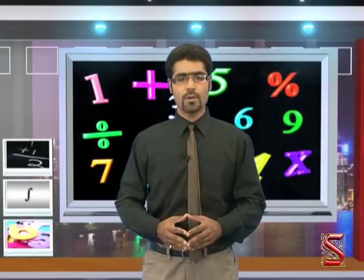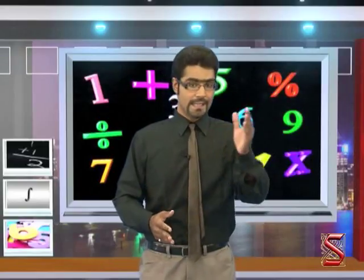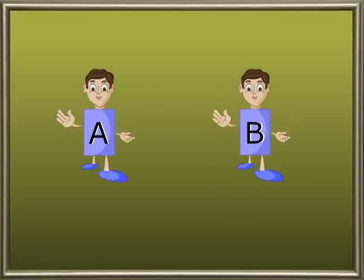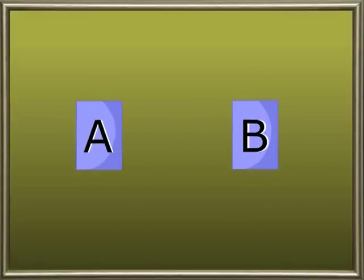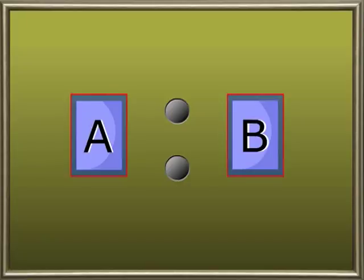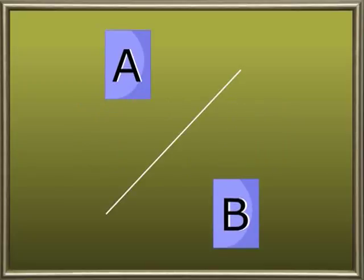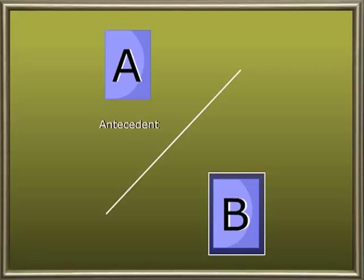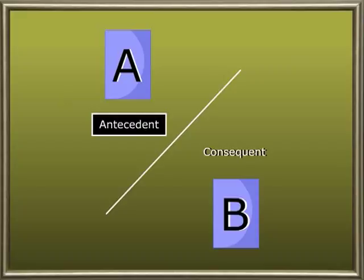Ratio consists of two terms: the antecedent and consequent. If A and B are two numbers, the ratio of A and B is expressed as A is to B and is also written as A by B. A is known as the antecedent and B is known as the consequent. That is, the numerator is called the antecedent and the denominator is called the consequent.